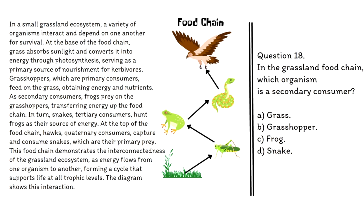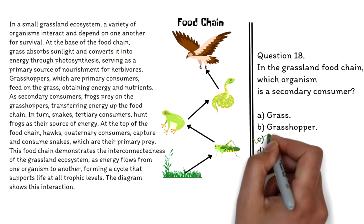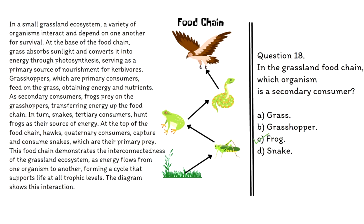Question 18: In the grassland food chain, which organism is a secondary consumer? A. Grass, B. Grasshopper, C. Frog, D. Snake. The correct answer is C, Frog. In the grassland food chain, the frog preys on the grasshopper, which is a primary consumer. Since the frog obtains its energy and nutrients by feeding on the primary consumer, it is considered a secondary consumer in the food chain.